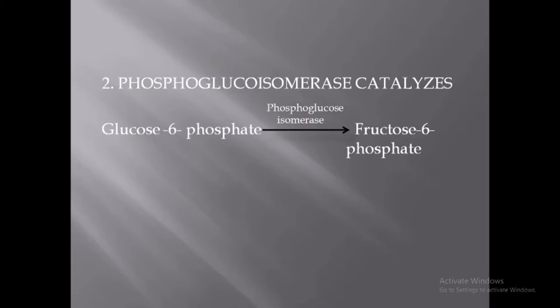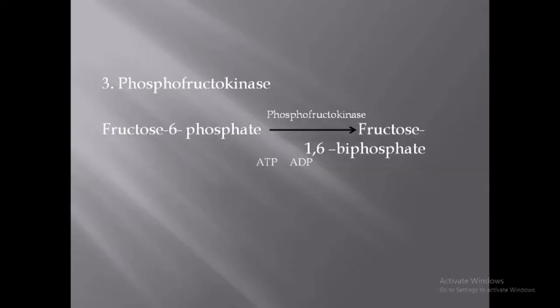In the second step, glucose-6-phosphate is converted to fructose-6-phosphate with the help of the enzyme phosphoglucose isomerase; this reaction also requires magnesium ion. The third step is the conversion of fructose-6-phosphate to fructose-1,6-bisphosphate with the help of the enzyme phosphofructokinase. This reaction is the rate-limiting step of glycolysis.